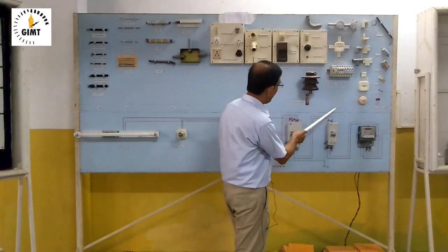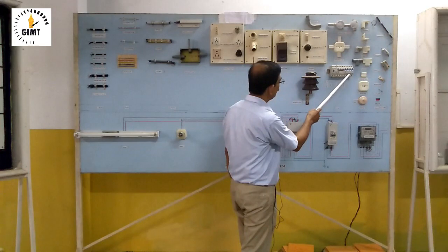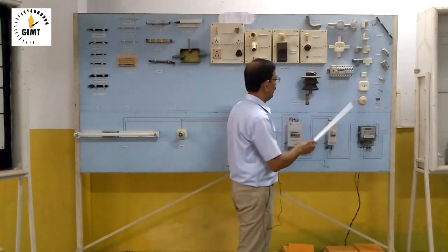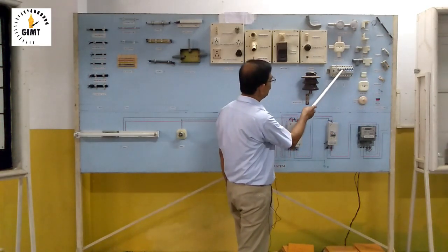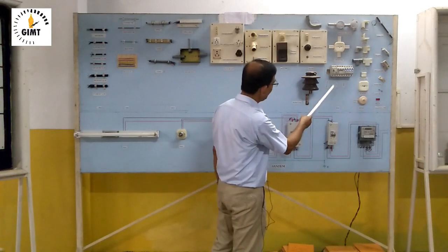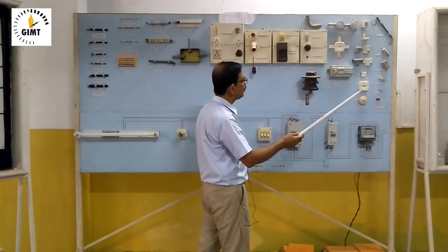And now come to MCB. This is a four-pole MCB used for three-phase supply. Then come to three-pole MCB, again two-pole MCB, and normally we will be getting the single-pole MCB.